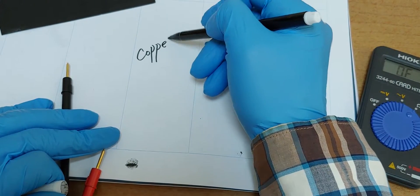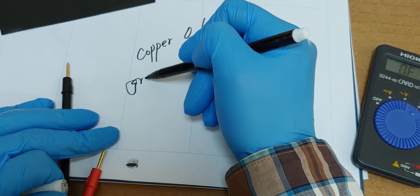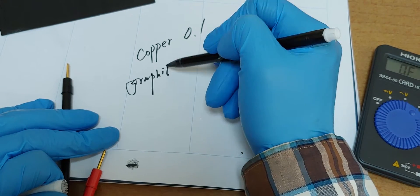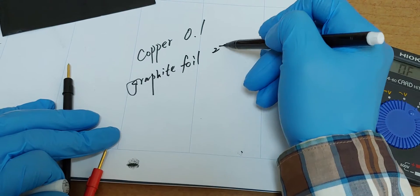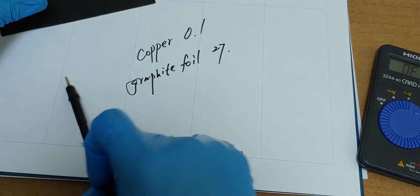Copper 0.1, graphene or graphite, let's say graphite foil, 27. Too high.